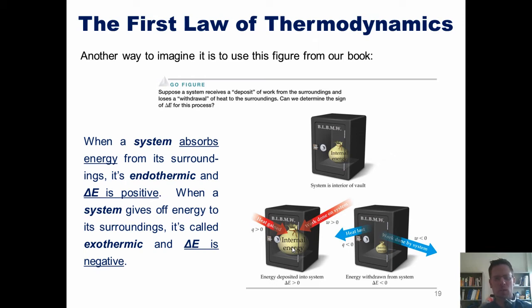Now, in contrast, when a system gives off energy to its surroundings, we call it exothermic, and delta E is negative. So in our metaphor, we have our system transfer energy, either through work or heat, out of its account. We end up having the change in energy, delta E, being negative. So once again, remember, if energy is absorbed by the system, delta E is positive. If it's given off by the system, delta E is negative.